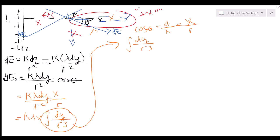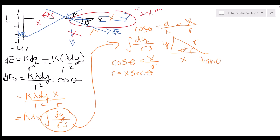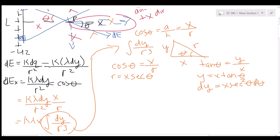To evaluate the integral, we redraw the triangle: the hypotenuse is r, the opposite side is y, and the adjacent side is x. From this, cosine theta = x/r, so r = x secant theta. Also, tangent theta = y/x, giving y = x tangent theta, and dy = x secant² theta d theta.